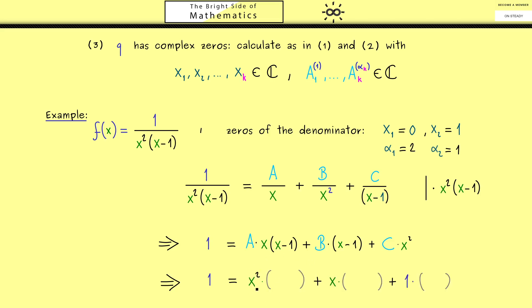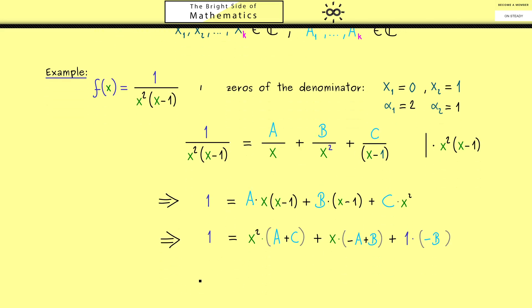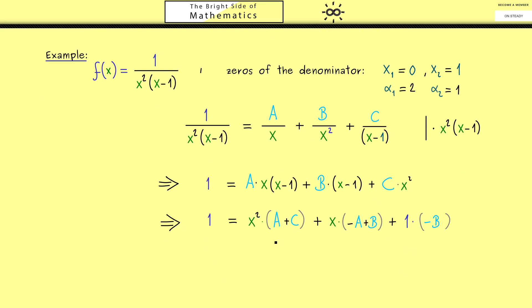We bring the right-hand side into standard polynomial form by expanding and factoring out. We get a plus c for the x squared coefficient, minus a plus b for the x coefficient, and minus b for the constant term. Comparing with the left-hand side — which is just 1 — we get: the x squared coefficient should be 0, the x coefficient should be 0, and the constant should be 1.